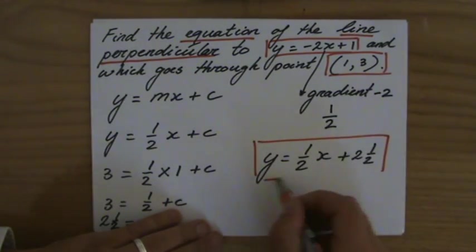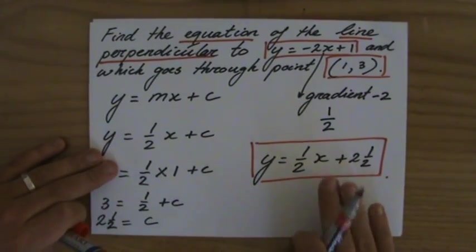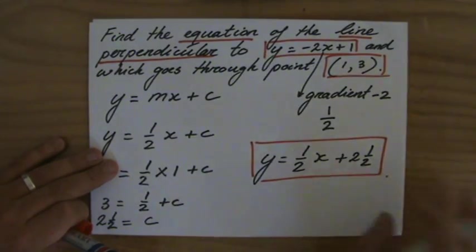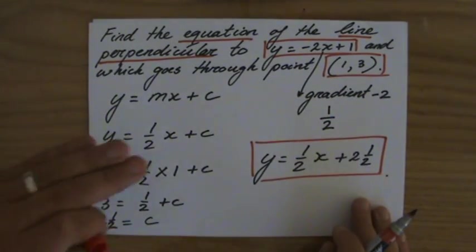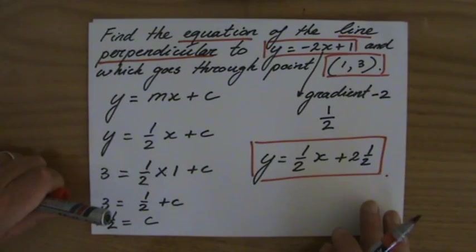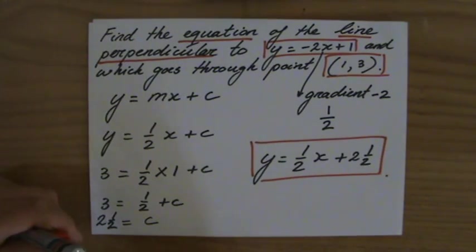Now I want you to do yourself a big favor and graph this line and graph that line as well, and then see for yourself that yes, they are perpendicular with each other; they do make an angle of 90 degrees. All the best.